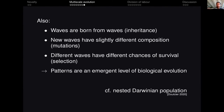Also, when we look at waves, we see that waves are born from waves, occasionally with some variation — inherited variation — and there is a differential survival between waves with different compositions. So these spatial patterns are themselves an emergent level of biological evolution. We see here an example of what the mountain showed of nested Darwinian populations.